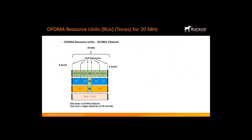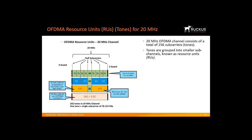Let's look at how OFDMA subdivides a 20 MHz channel into smaller frequency allocations based on multi-user traffic needs. The AP decides how to allocate the channel, always assigning all available resource units on the downlink or uplink. By subdividing the channel, parallel transmissions of small frames to multiple clients can happen simultaneously. The 20 MHz OFDMA channel consists of a total of 256 sub-carriers. These sub-carriers, or tones, are grouped into smaller sub-channels known as resource units, with a minimum size of 26 carriers, which will accommodate up to 9 users for every 20 MHz bandwidth.